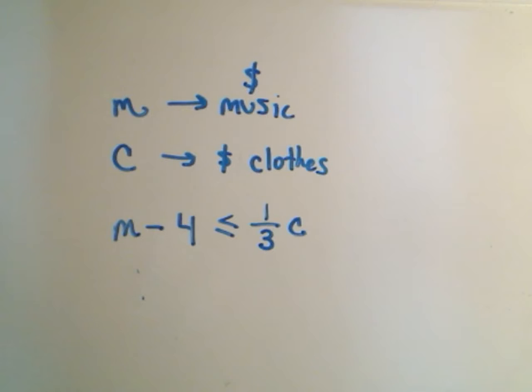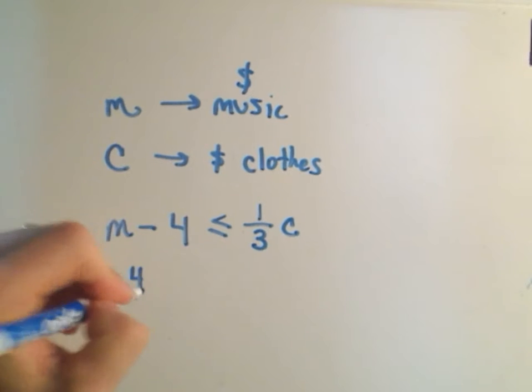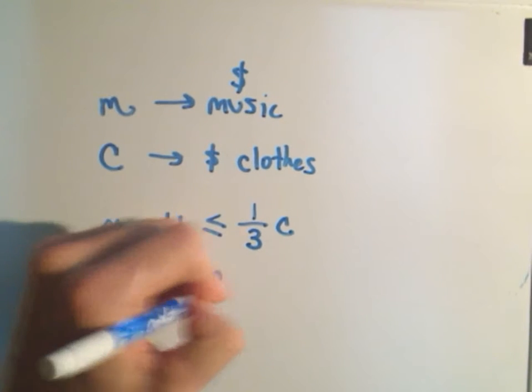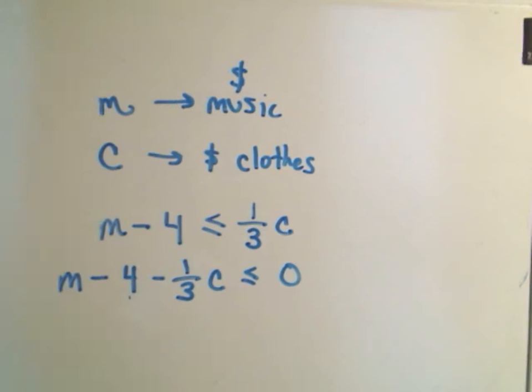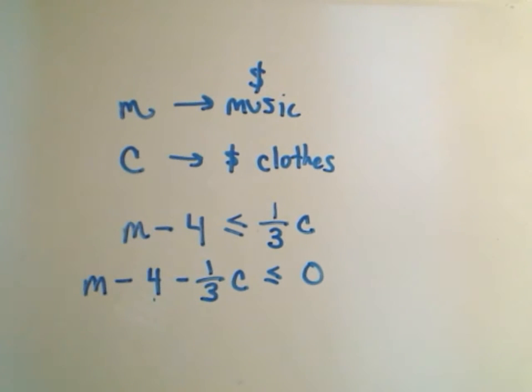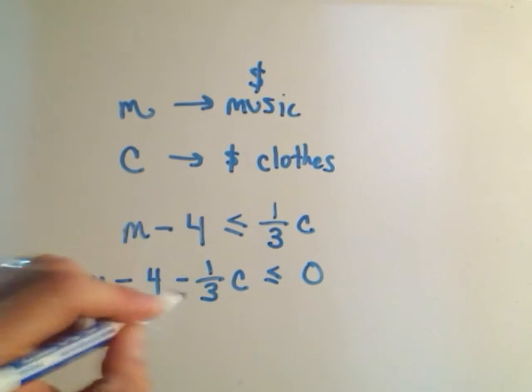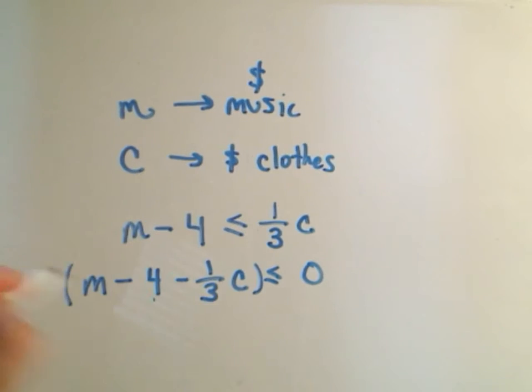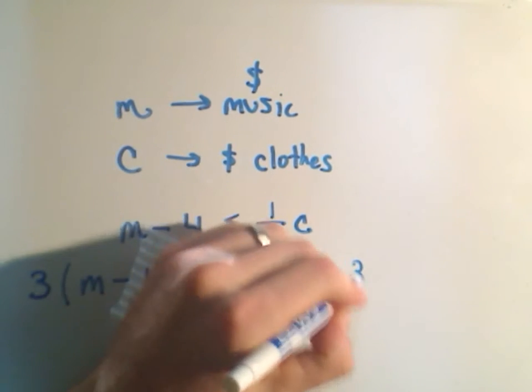Now to get your inequality, notice the answers had zero on the right side. So we can simply subtract the one-third C from both sides and get less than or equal to zero. Then they got rid of all the fractions, so we can just multiply both sides by three.